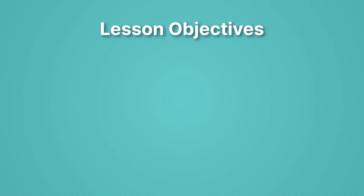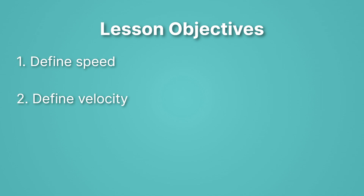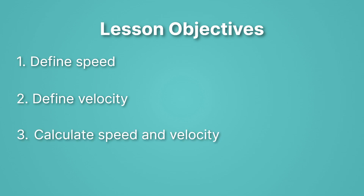First, let's review our lesson objectives. We'll define speed. Then we'll define velocity. Remember that these sound similar, but one is actually a vector. Do you remember which one? Then we'll calculate speed and velocity.